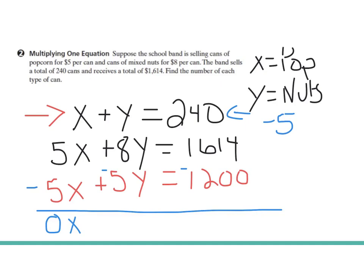And then I have 8y plus a negative 5y, which is the same as 8y minus 5y, which is 3y. And that's a positive, so I'm going to put that plus there to remind us. And then 1614 minus 1200 gives us 414.